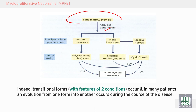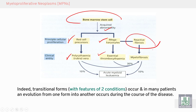The JAK2 mutation can occur either in the red cell precursor, leading to polycythemia vera with increased red cell production; or in the megakaryocyte lineage, leading to increased production of platelets, known as essential thrombocythemia; or causing fibrosis with increased fibrous tissue, leading to myelofibrosis.